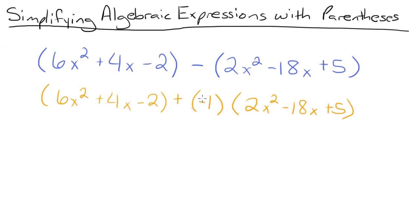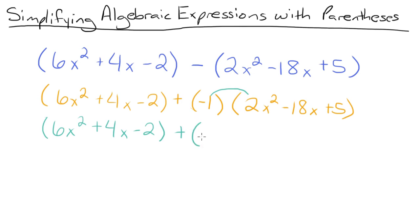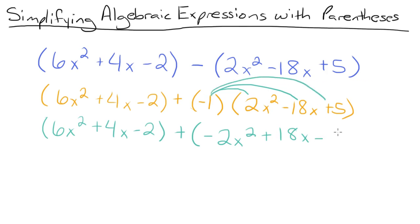Now that we have a negative 1 here, we need to distribute this negative 1 into each term in the second set of parentheses. We're going to leave the first set of parentheses exactly the same: 6x squared plus 4x minus 2. Then, negative 1 times 2x squared is negative 2x squared. Negative 1 times negative 18x is plus 18x. And negative 1 times positive 5 is negative 5. Notice that the sign has changed in front of each term.